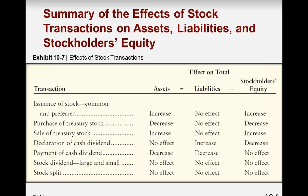This slide summarizes the effects of stock transactions on assets, liabilities, and stockholders' equity. Issuing common stock increases assets because you get cash, and increases stockholders' equity. Buying treasury stock decreases cash and decreases stockholders' equity. Selling treasury stock increases cash and stockholders' equity. Declaring a cash dividend increases liabilities and decreases retained earnings. Paying a cash dividend reduces cash and reduces liabilities. A stock dividend or stock split doesn't have any effect on the balance sheet totals.